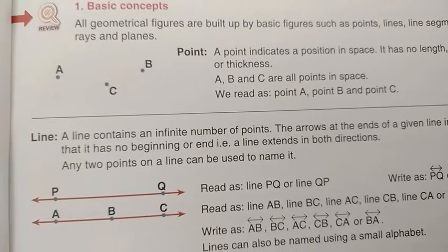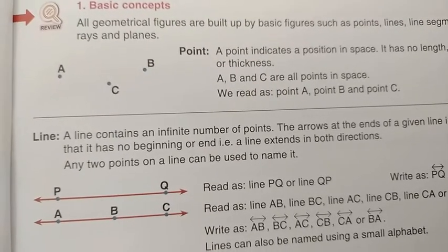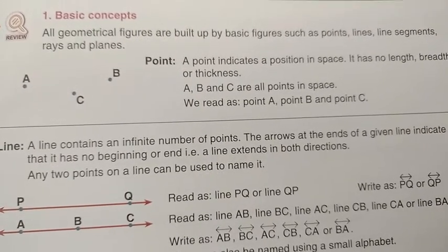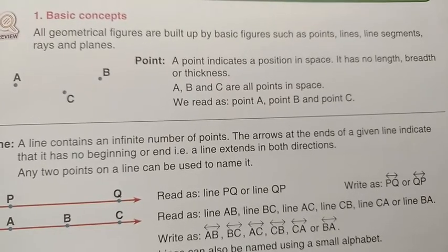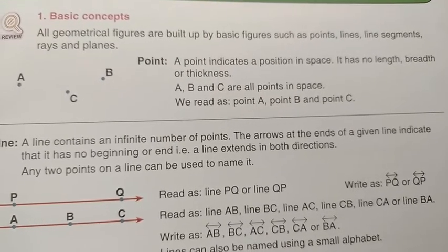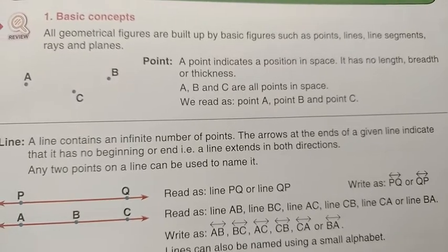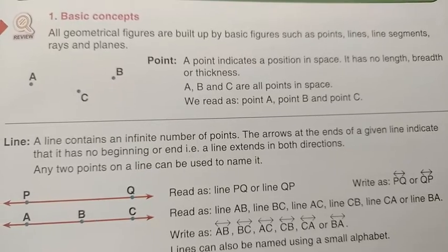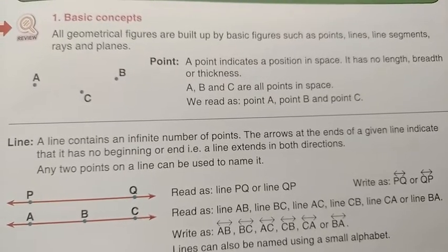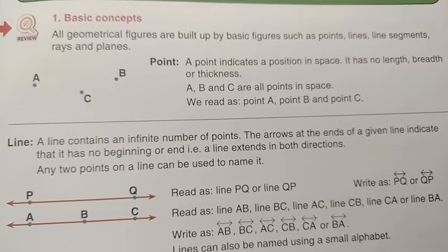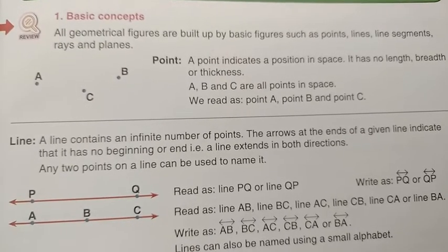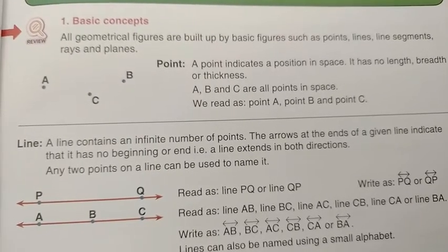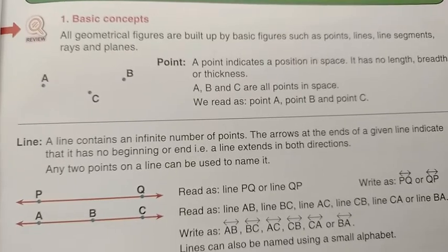First, see here. Points A, B, C are there. What is the meaning of point? A point indicates a position in space. It has no length, breadth or thickness. A, B, C are all points in space. We read as point A, point B, and point C. Point only indicates position — it has no length, breadth or thickness.